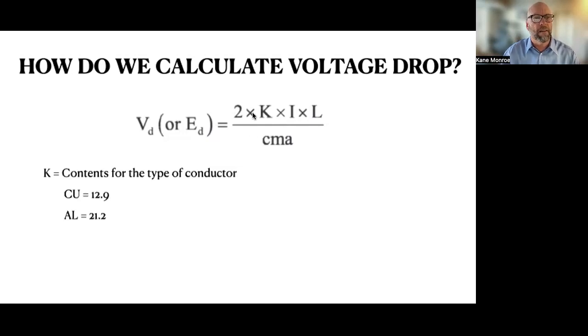Alright, so what does K stand for? K is the constant, and that depends on the type of wire that you're trying to figure out. For copper, we use 12.9 as a number, and aluminum is 21.2. Those two are always the same depending on what material you use.